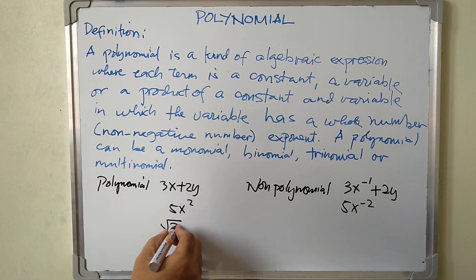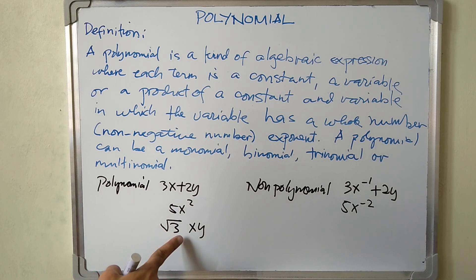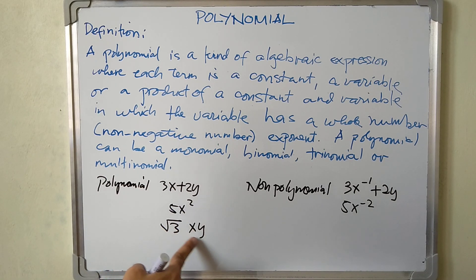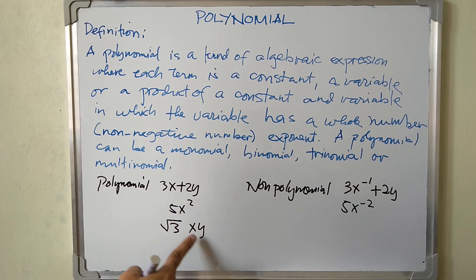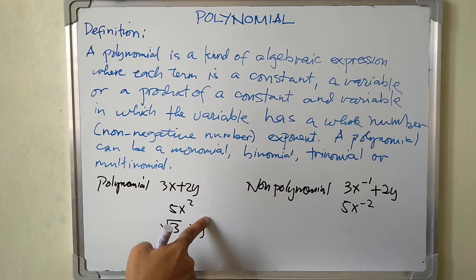Another example: the square root of 3 times xy. This is a polynomial candidate because we have a constant — the square root of 3 — and variables x and y. The exponent of x is 1 and the exponent of y is 1.